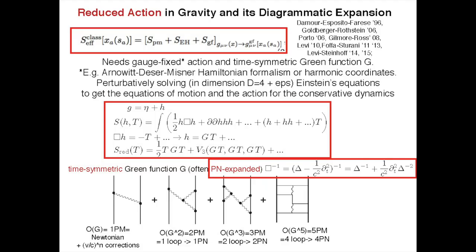One way to do that is to start from the full action for gravity and the two point particles: an action which includes the action for two point masses, the Einstein-Hilbert action for gravity, a gauge-fixing term, and then you want to — as it's called in QFT — integrate out the gravitational field. This essentially generates a gravitational potential, a gravitational force, and a gravitational interaction energy between the two world lines. You replace the metric by solving Einstein's equations in presence of two given world lines.